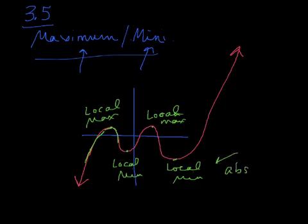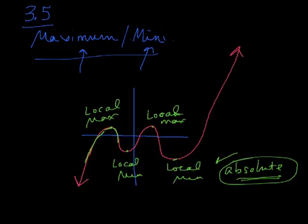Now we also have things that we call absolute maximums and minimums. That's if it is straight up the lowest point on the graph or the highest. Then you would call it an absolute maximum. These are all local because this point right here is not the highest point on the graph — same thing here — and this one is not the lowest point on the graph. Because the graph keeps going to infinity on both ends.